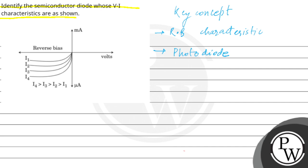So we can see here that our current is independent of our reverse voltage. So we know that our photodiodes work in reverse bias. So from here,